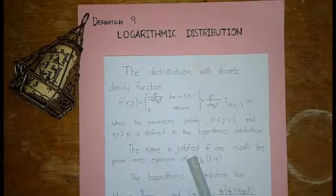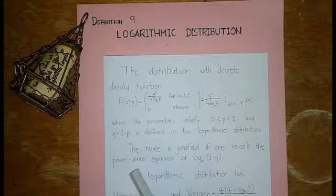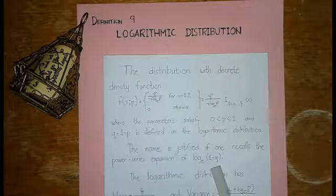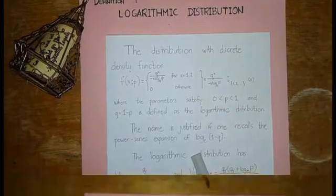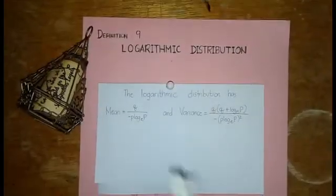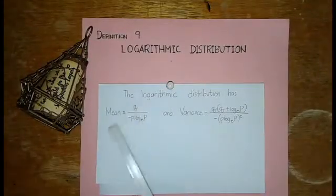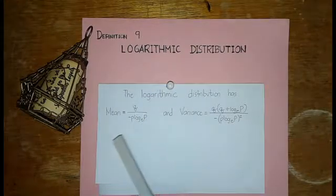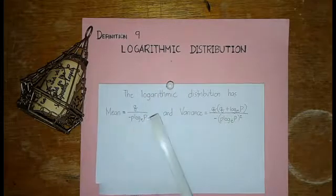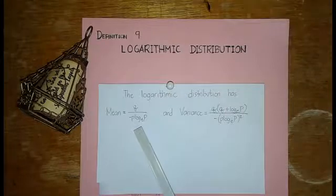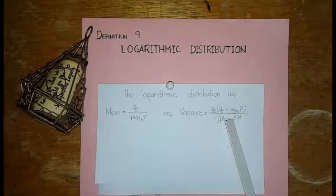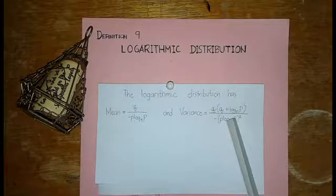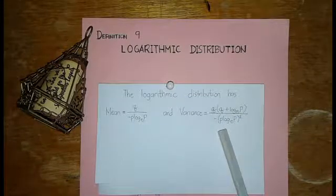The name is justified by recalling the power series expansion of log(1 - q) base e, or the geometric series expansion. The logarithmic distribution has mean equal to q over negative p log(p) base e, and variance equal to q times (q + log(p) base e) all over negative p log(p) base e, quantity squared.